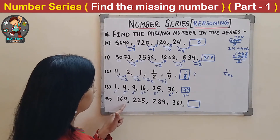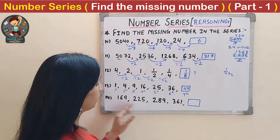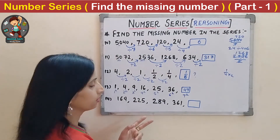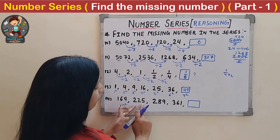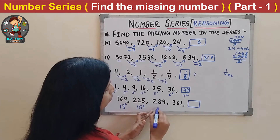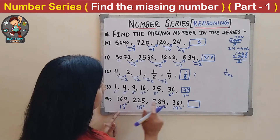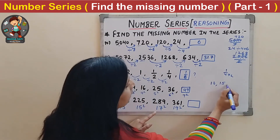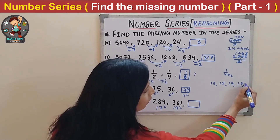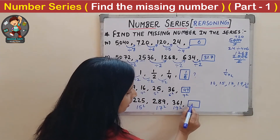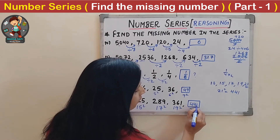Fourteenth question: 169, 225, 289, 361, _. These are squares of some numbers: 169=13², 225=15², 289=17², 361=19². The bases are odd numbers 13, 15, 17, 19. The next odd number is 21, so the missing number is 21²=441.